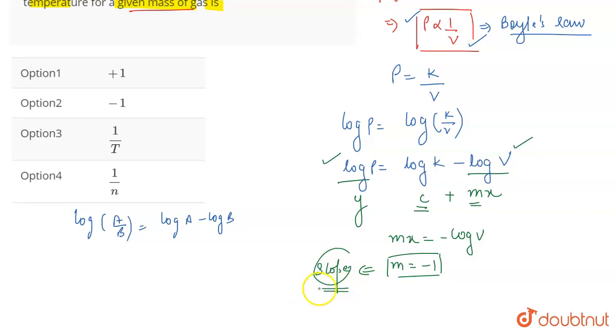So, M is actually the slope of the curve that we are talking about because we are plotting a curve between log P and log V. So, this will be a straight line curve with a slope of minus 1.